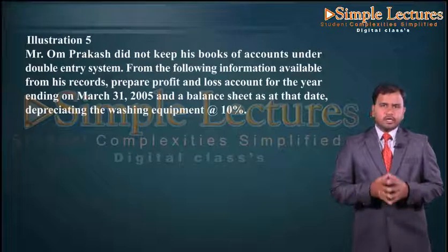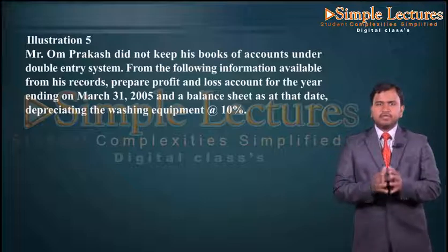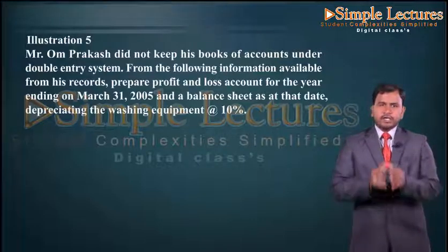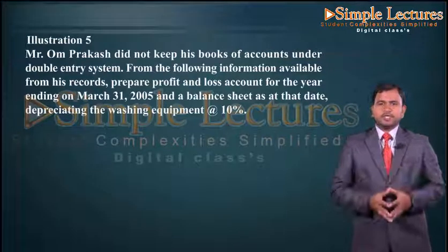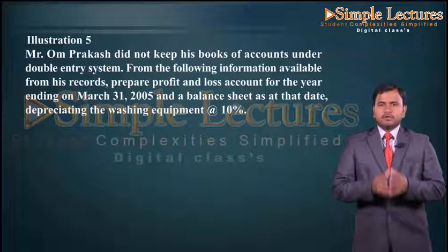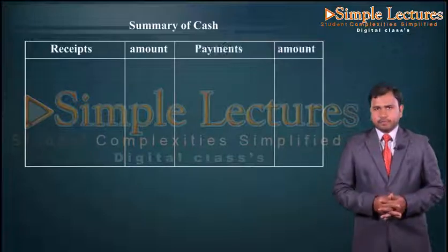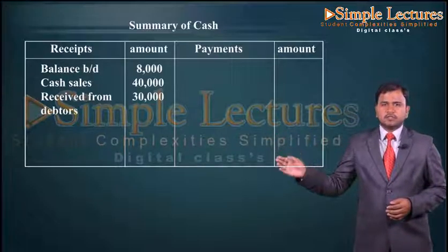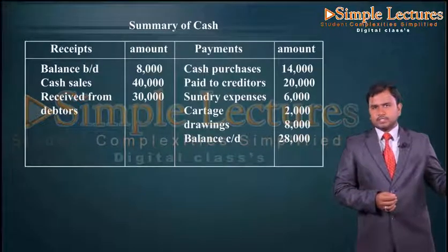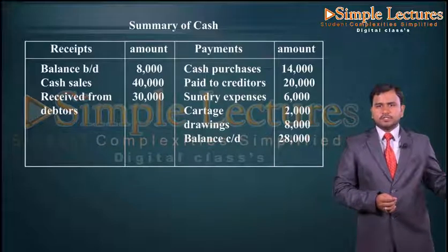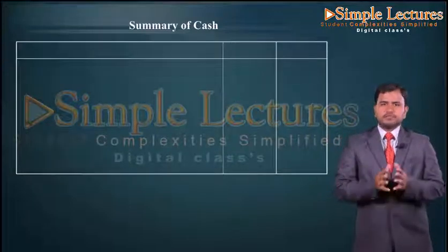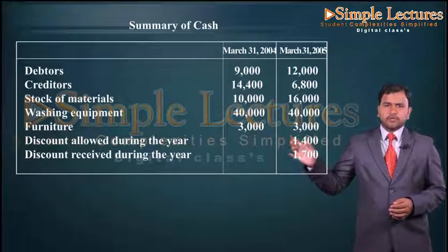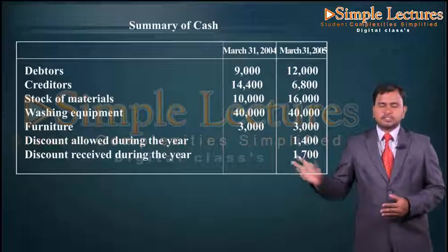Let us take another illustration where Mr. Om Prakash did not keep his books under the double entry system. From the following information we have to prepare a profit and loss account for the year ending March 31st 2005, a balance sheet as on that date, and depreciate the washing equipment at ten percent per annum. We have a summary of cash with receipts — balance brought down, cash sales, received from debtors — and payments: cash purchases, paid to creditors, sundry expenses, cartage, drawings, and balance carried down. Other information includes opening and closing balances for debtors, creditors, stock of material, washing equipment, furniture, discount allowed, and discount received.